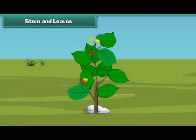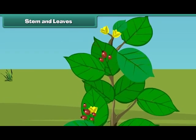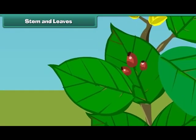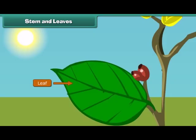Friends, do you know which part of the plant helps them to prepare food? That's right. It is the leaves. Leaves are green in color and are born out of a stem.